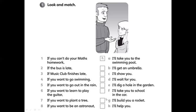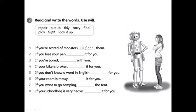In exercise two, you have to read the sentences and write the missing words. You have a box full of words and you write them in each line using 'will'. For example, the first one: 'If you are scared of monsters, I'll fight them' — meaning I will fight them. Take the verb 'fight' from the box and use 'will'. The robot is speaking, so write 'I will' or 'I'll', then choose the verb from the box.